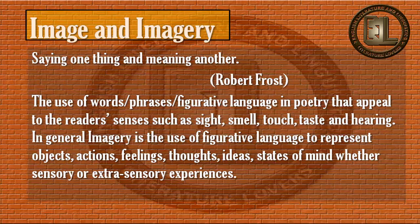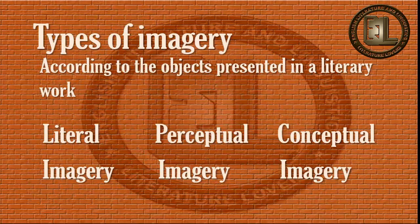In general, imagery is the use of figurative language to represent objects, actions, feelings, thoughts, ideas, state of mind, whether sensory or extrasensory experiences. So let's discuss the types of imagery. There are three types of imagery according to the objects presented in a literary work: Number 1, literal imagery; Number 2, perceptual imagery; Number 3, conceptual imagery. Let's discuss them one by one.